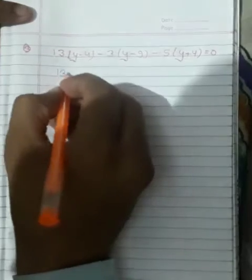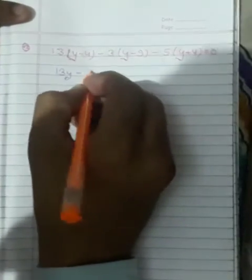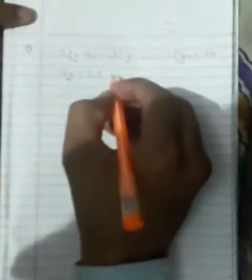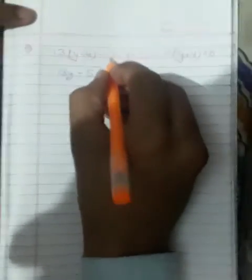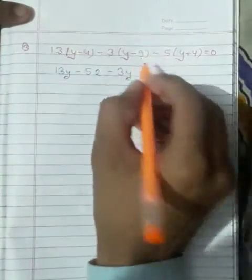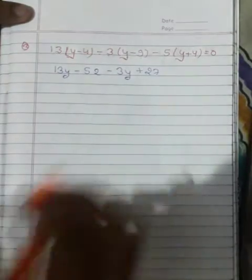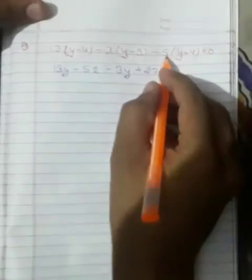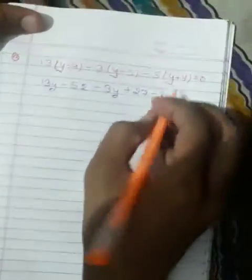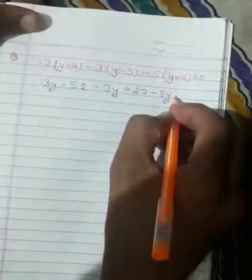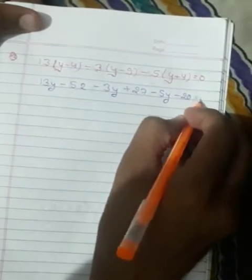Students, see this. 13 multiplied by y gives 13y. 13 multiplied by 4 gives minus 52. Minus 3 multiplied by y gives minus 3y. Minus 3 multiplied by minus 9 gives plus 27. Minus 5 multiplied by y gives minus 5y. Minus 5 multiplied by 4 gives minus 20, and all of this is equal to 0.